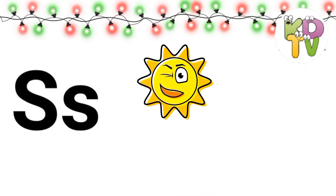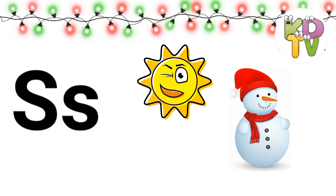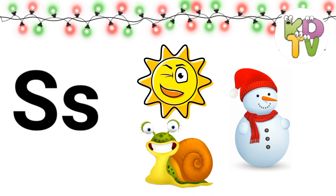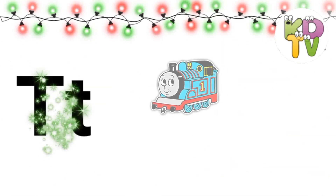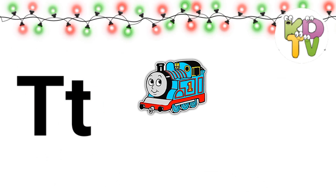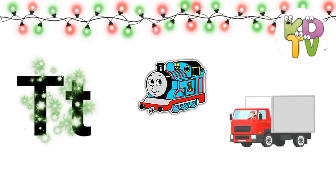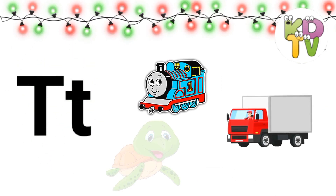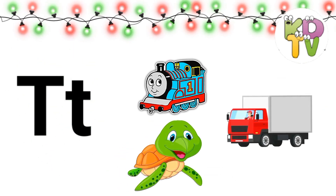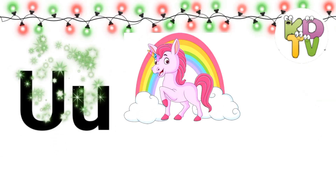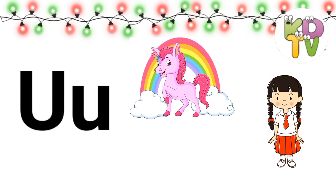S is for Sun, Snowman. T is for Turtle. U is for Unicorn, Uniform, Umbrella.